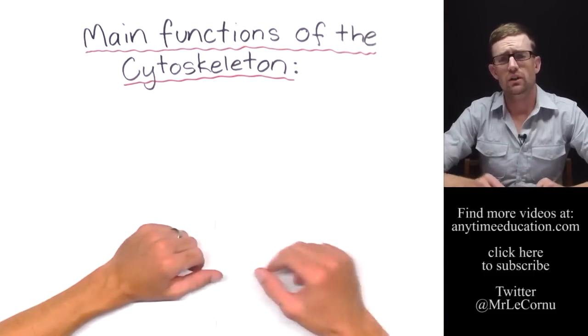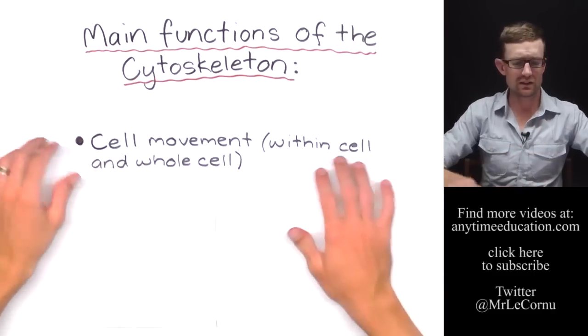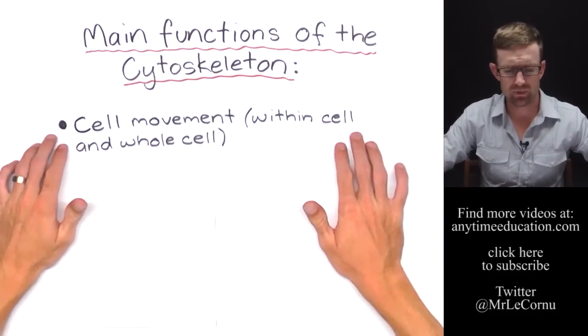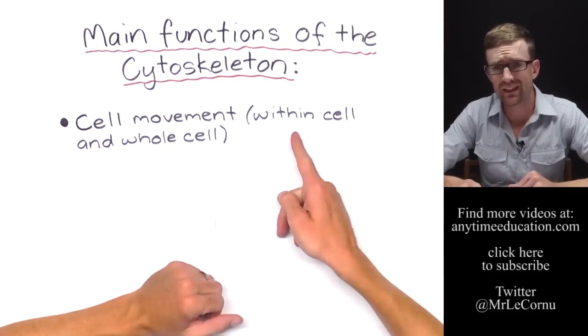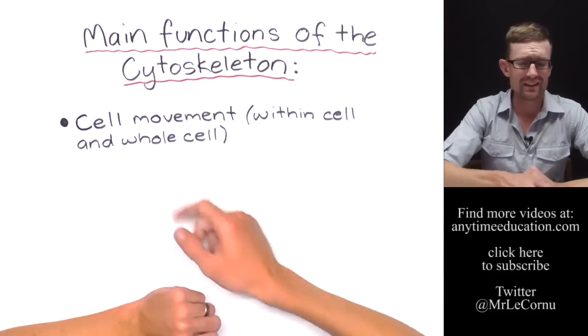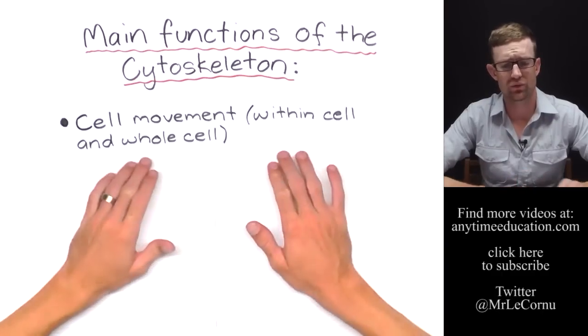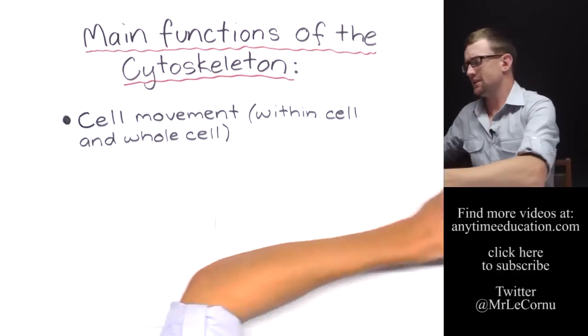The second major function of the cytoskeleton is cell movement. And when we're talking about cell movement, we mean within the cell and the whole cell itself. Let's start within the cell.